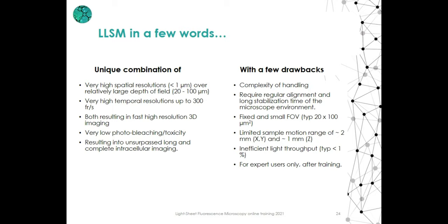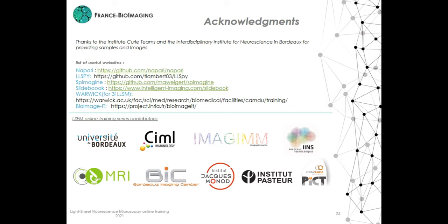To conclude this practical course on lattice light sheet microscopy, lattice light sheet microscopy combines very high spatial and temporal resolutions over an extended depth of field with very low photobleaching and phototoxicity. On the other hand, it is not a simple turnkey microscope — it requires good training to carefully align parts of the optical system, and temperature stabilization is essential; failing to follow these rules will result in degraded spatial resolution. Also, the field of view is quite small and cannot be modified, and the sample size and range of motion is limited to approximately one millimeter. That being said, the great performance of LLSM still makes it probably the best microscope for high-resolution, fast 3D imaging of intracellular dynamics. Please find here some useful websites related to lattice light sheet microscopy. Thank you for your attention.